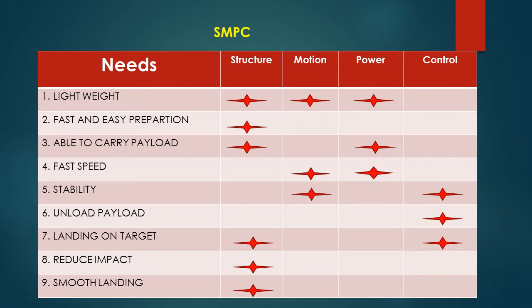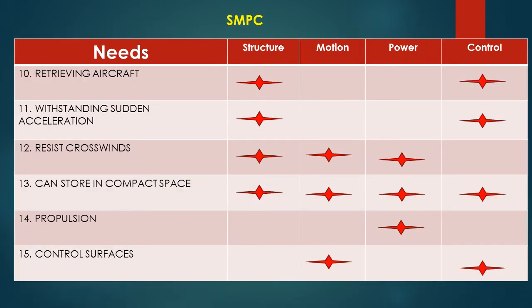In structure, we need our structure to be able to withstand hard landings so that we do not need to spend much money on buying new materials to maintain it. For motion, we need our plane to be able to bank at a certain angle, thus the rudder and elevator are needed. For power, we use a propeller and a motor to power up the plane. We also use batteries, and hand launch power is also required during take-off. For control, we use a multiple channel control system to control the aircraft.